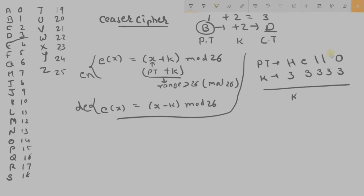Now E, E is 4 plus 3, 7. 7 is H, so we will replace E by H. L, L is 11, 1, 2, 3, 14, O. So we will replace L by O, again L by O.